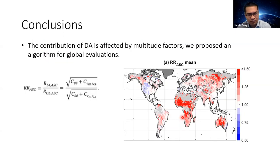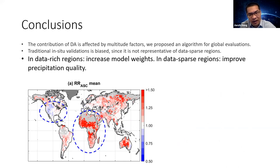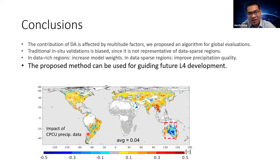In conclusion, we provide a simple but robust method to evaluate global-scale data assimilation contributions. While demonstrated here for soil moisture, the method should work for any data assimilation system under any variable of interest. We show that previous ground-based evaluation results are very likely biased because they cannot sample data-sparse regions. We also suggest being very careful in data-rich regions, since errors in the assimilation system are likely to degrade open-loop runs. In data-sparse regions, improving precipitation quality is a key priority. Our method is demonstrated to be useful for improving future land data assimilation development.